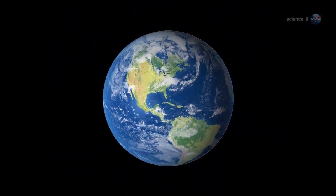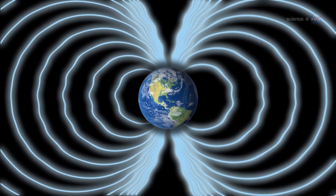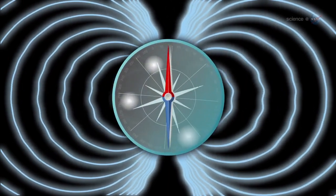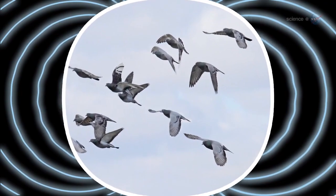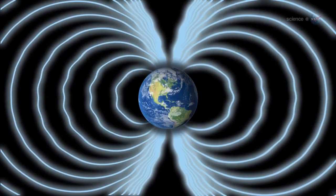Every person on Earth lives inside a magnetic field. Springing from the core of our planet, lines of magnetic force wrap around the globe, deflecting compass needles, guiding pigeons, protecting us from cosmic rays and solar storms.